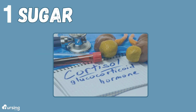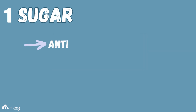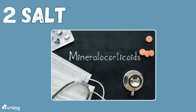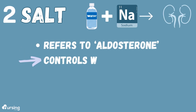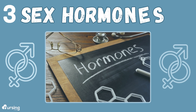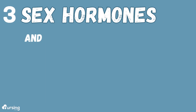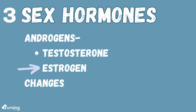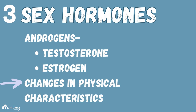The first — sugar — hints at glucocorticoids, which is a steroid hormone involved in anti-inflammation, immunosuppression, and blood glucose regulation. Second are mineralocorticoids — remember this one with salt — since it refers to aldosterone, the hormone that helps control water and sodium reabsorption in the kidneys. And third, sex hormones — androgens like testosterone and estrogen — which control lots of things in the body, but in particular with Addison's and Cushing's diseases, you'll see changes in physical characteristics.